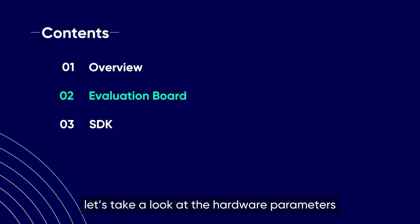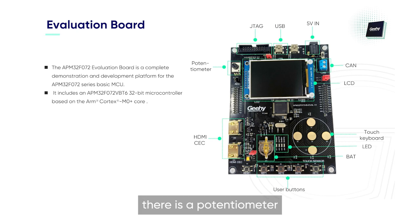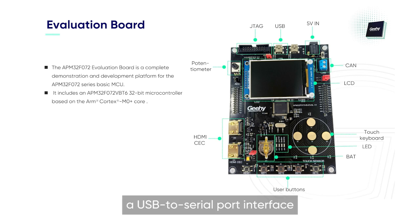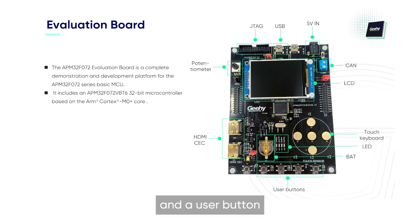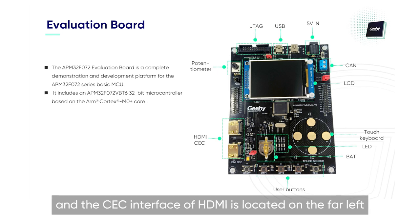Next, let's take a look at the hardware parameters. From the picture on the right, we can see that from left to right, there is a potentiometer, a JTAG interface, a USB interface, a USB to serial port interface, a 5VDC socket, a CAN interface, a touch keyboard, and a user button. There is an LED and a battery socket in the middle, and the CEC interface of HDMI is located on the far left.